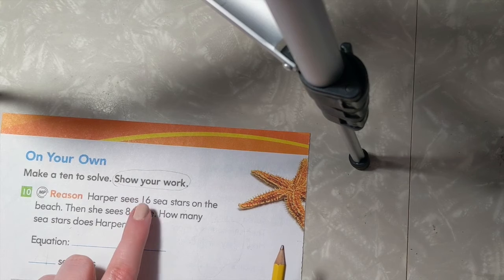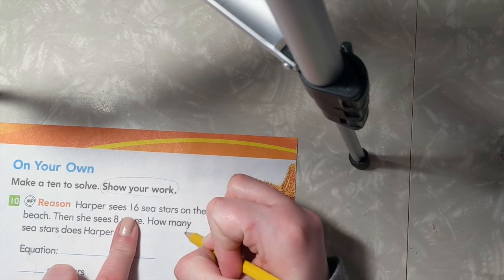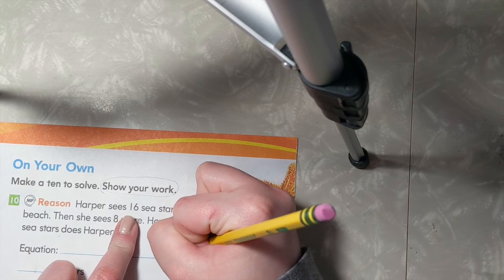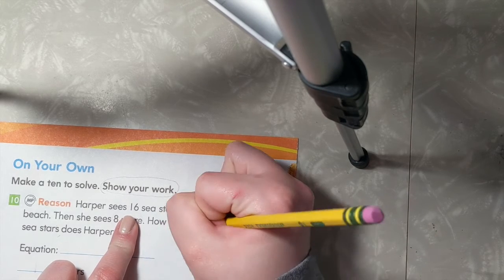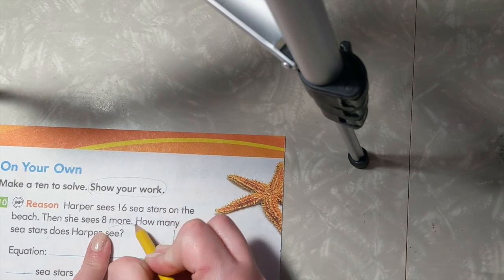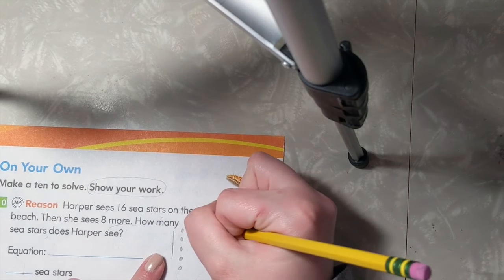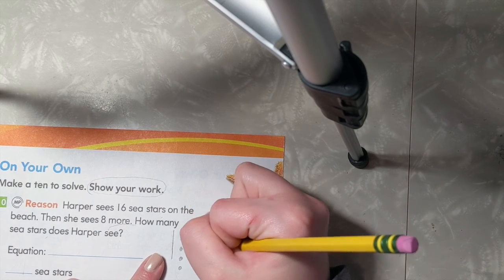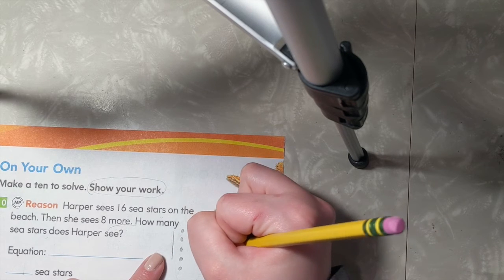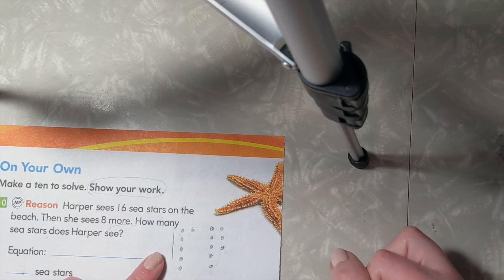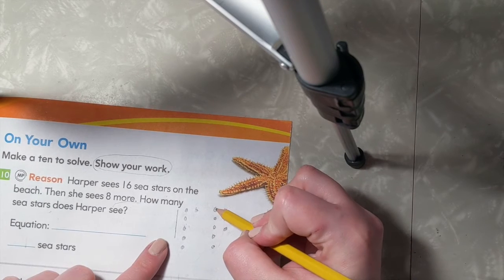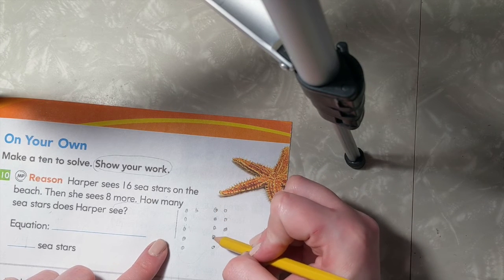So she starts off by seeing 16. So that's one group of 10 and 1, 2, 3, 4, 5, 6 ones. Then she sees 8 more, so I'm going to add 8: 1, 2, 3, 4, 5, 6, 7, 8. Let's count on from 6 to make a group of 10: 6, 7, 8, 9, 10.